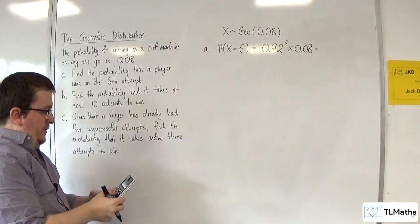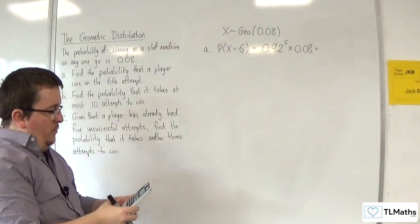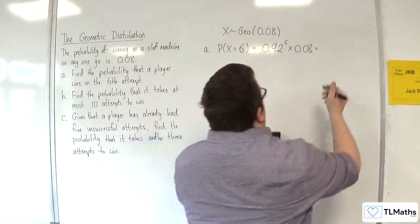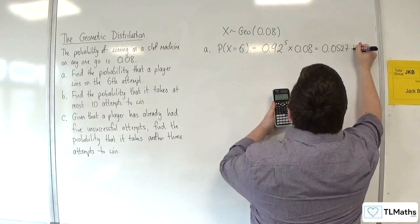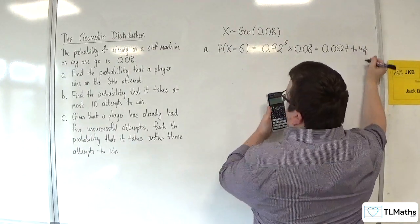So, 0.92 to the power of 5 times 0.08, and we get 0.0527 to four decimal places.